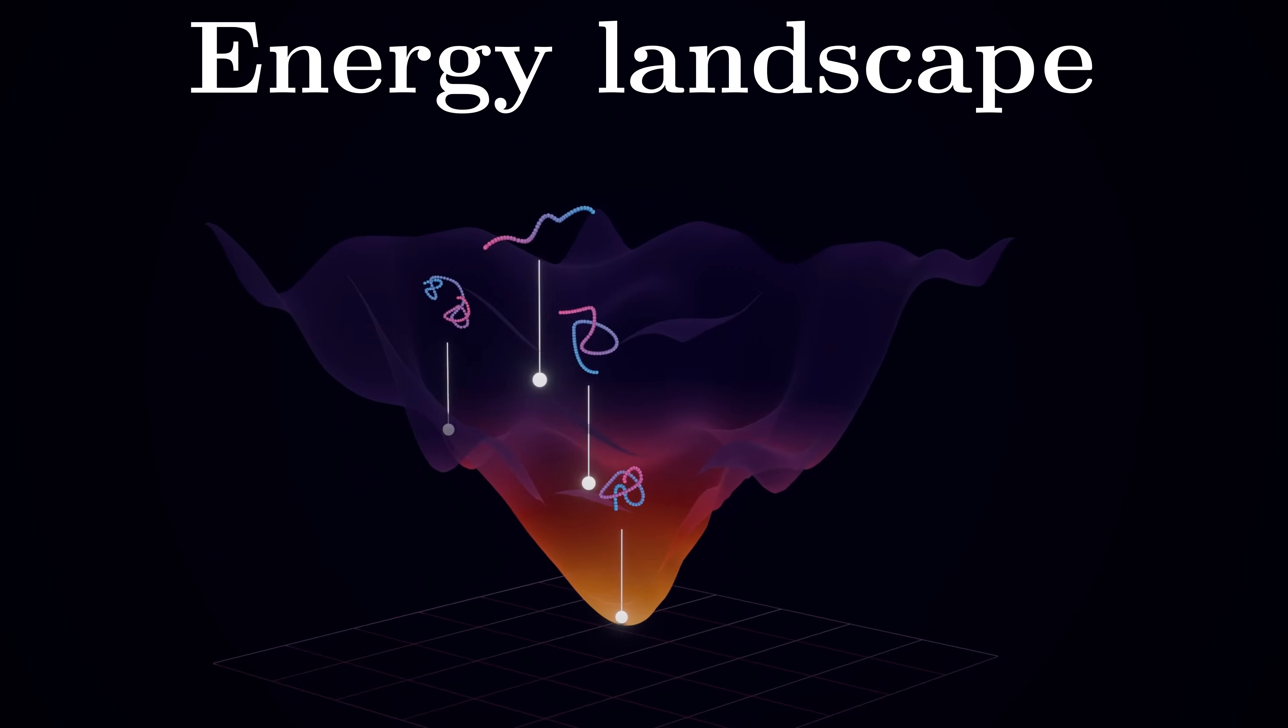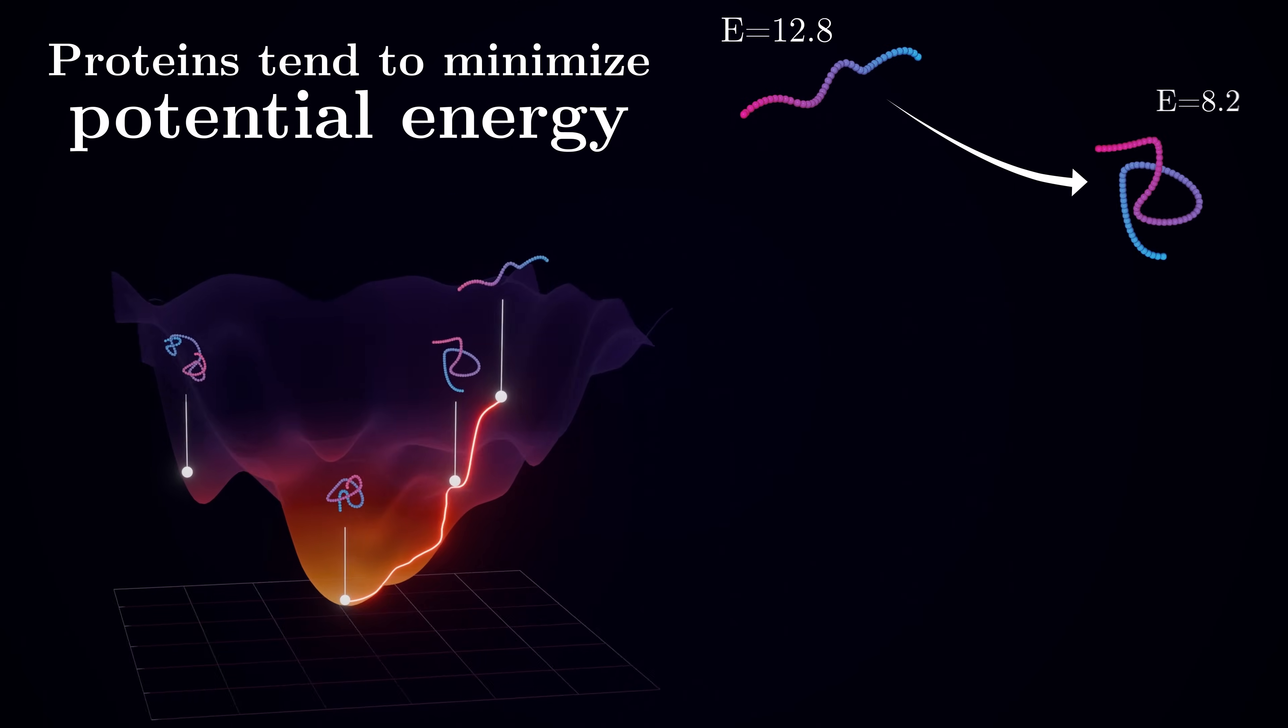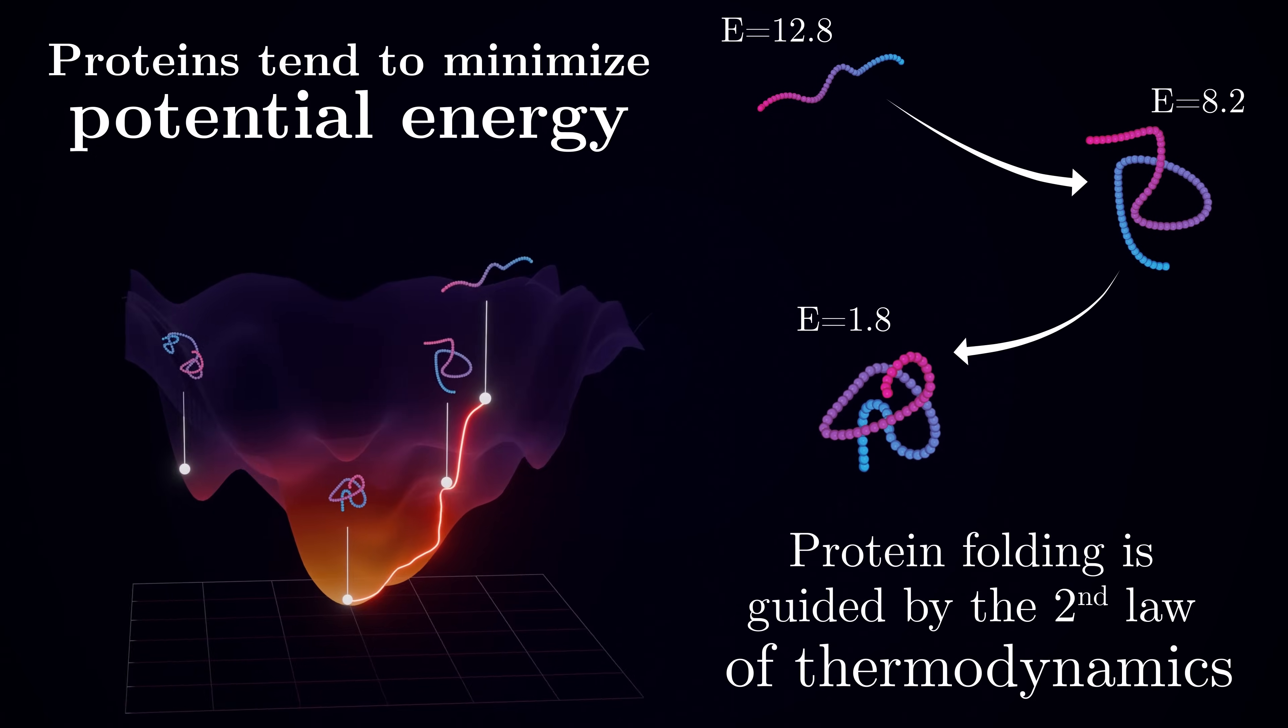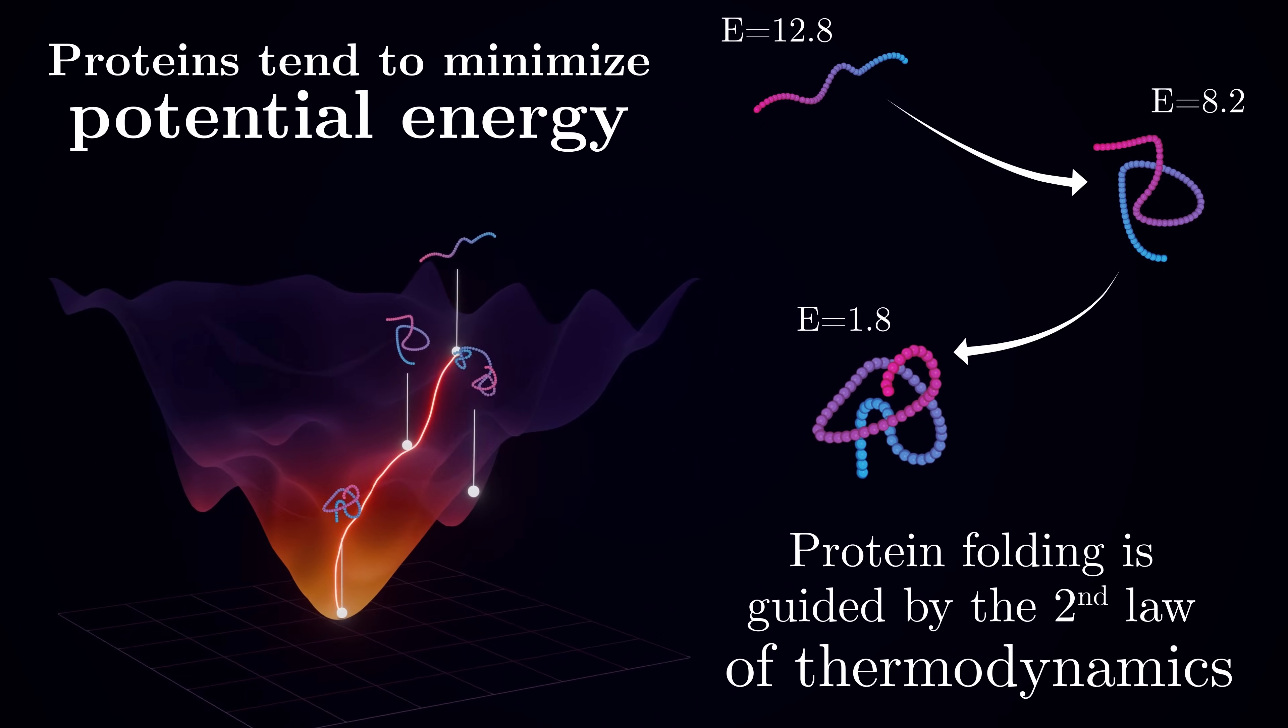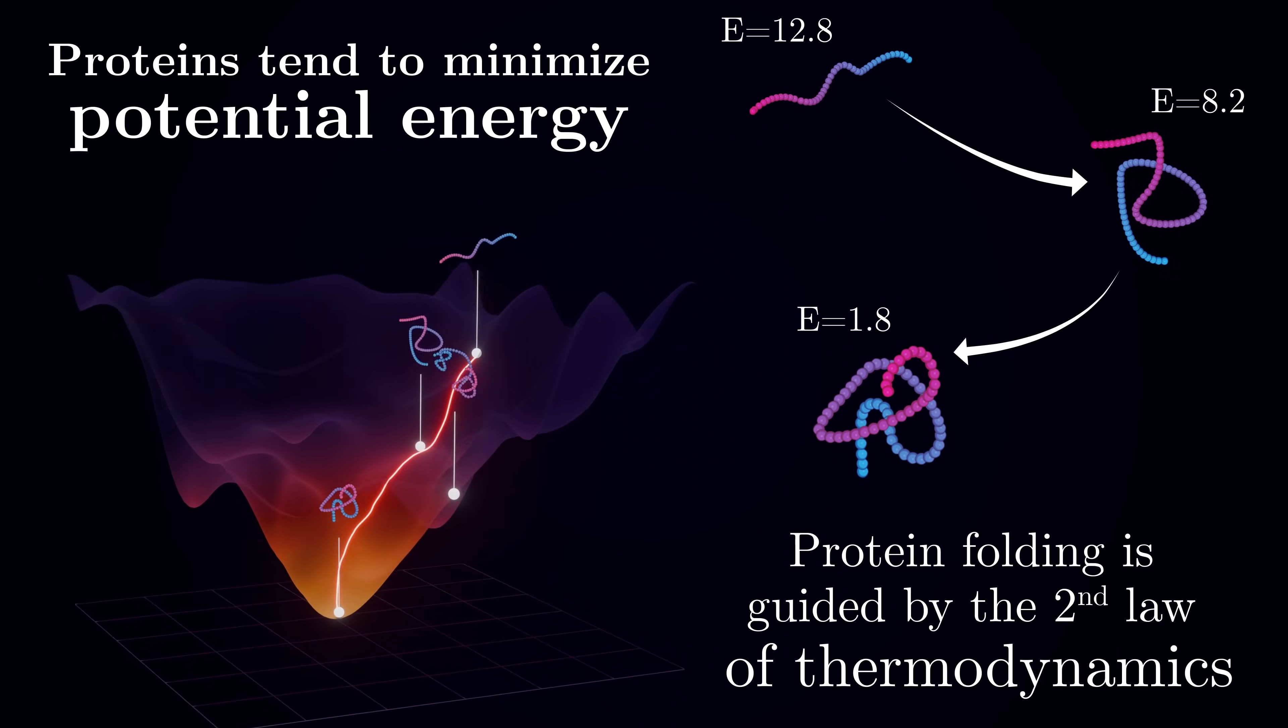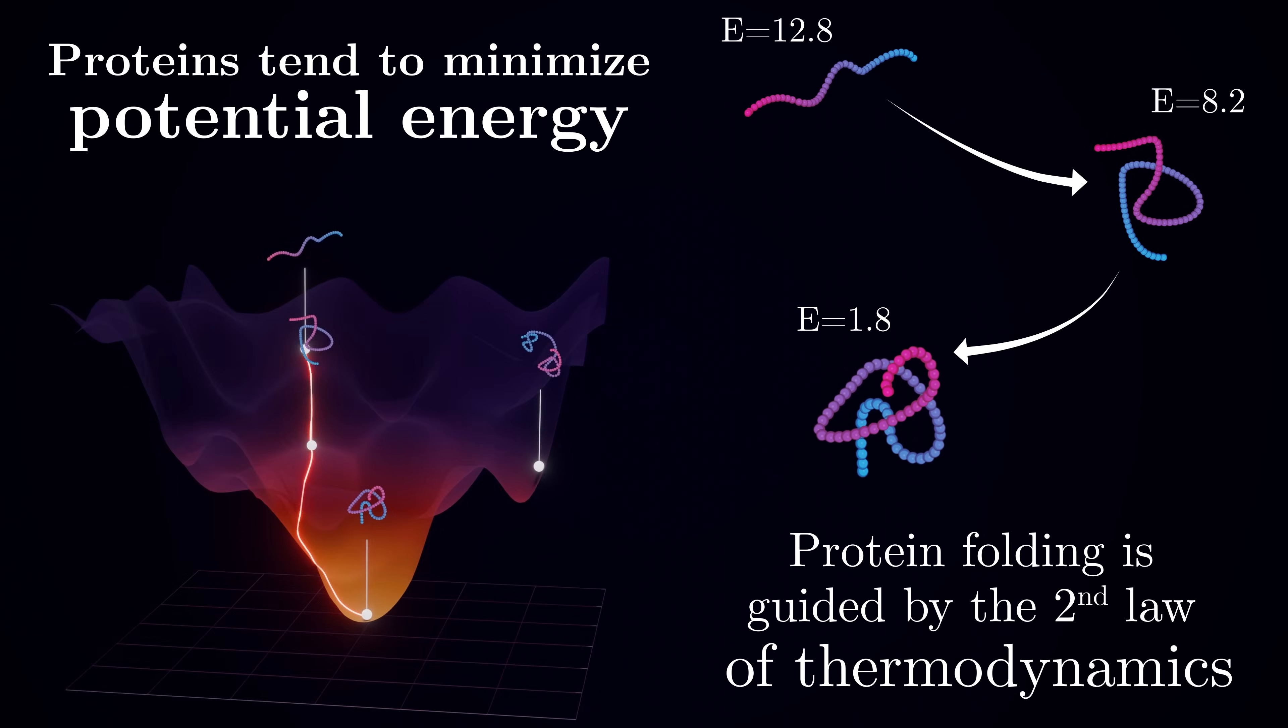For a protein, it would be a complex, rugged surface with many peaks and valleys. Now here is the key point. A protein molecule, like any physical system, tends to minimize its potential energy, guided by the second law of thermodynamics. It will naturally seek out the configuration that has the lowest possible energy level, as this represents the optimal arrangement of its atoms. And this, in fact, corresponds to the native, correctly folded state.